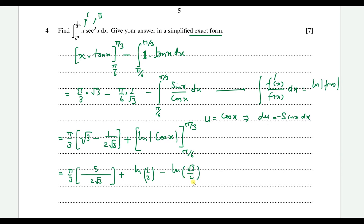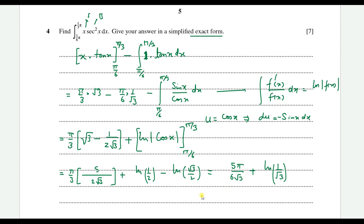Combining and simplifying: the boundary terms give (π/3)·√3 - π/(6√3) = 5π/(6√3) after taking LCM. The logarithm terms give ln(1/2 ÷ √3/2) = ln(1/√3) = -(1/2)ln(3). Rationalizing 5π/(6√3) = 5π√3/18, the final exact answer is 5π√3/18 - (1/2)ln(3).